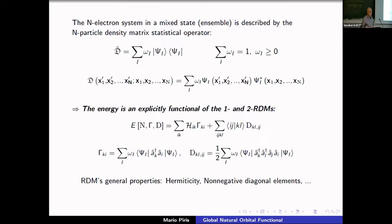The operators a† and a are the creation and annihilation operators associated with a complete orthonormal spin-orbital set. Because we have no spin dependence, for any system with spin different from zero we have a multiplet — several states with different spin projections but the same total spin. These systems can be described by an N-particle density matrix statistical operator.